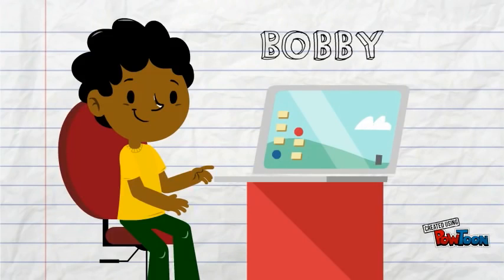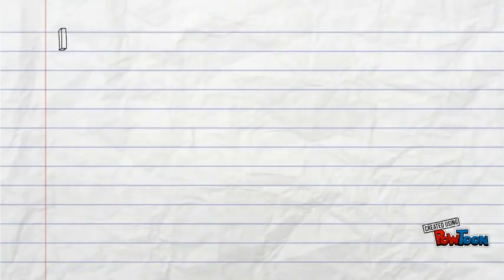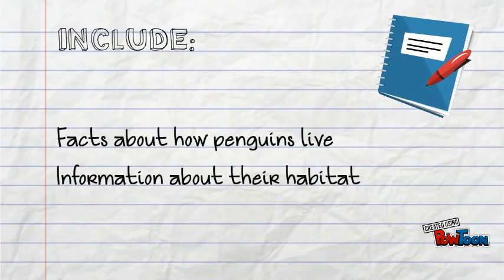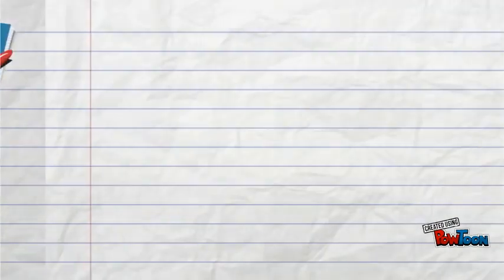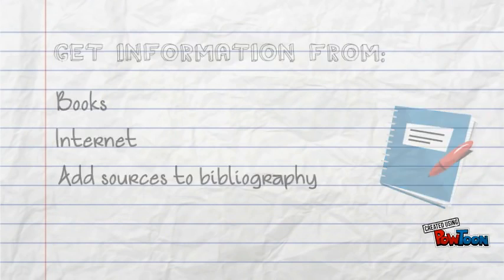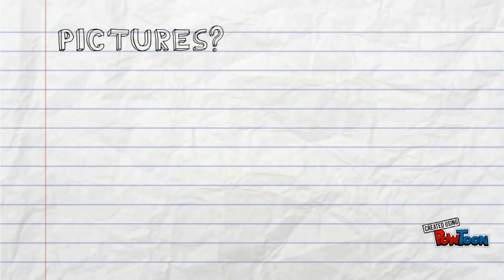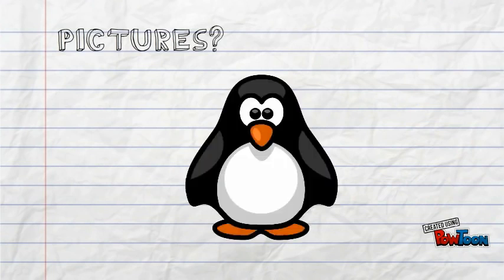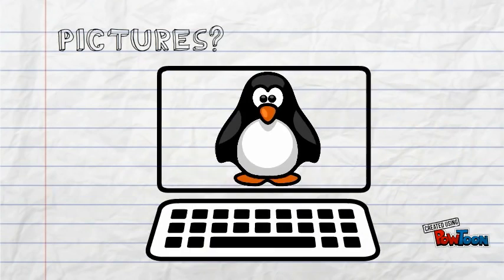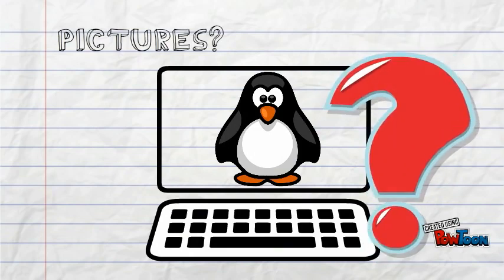This is Bobby. Bobby has to do a report about penguins. He needs to include facts about how penguins live, information about their habitat, and pictures of penguins. He can find the information he needs in books and on the internet, and he knows how to include those sources in his bibliography. But he is confused about using pictures he finds online. He knows they don't really belong to him, but whoever made them posted them online for everyone to see. So does that mean he can just copy and paste them into his report?